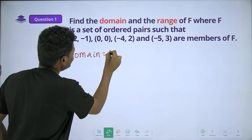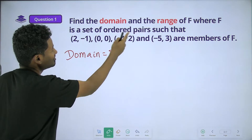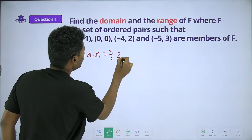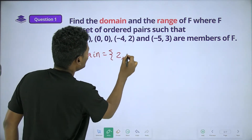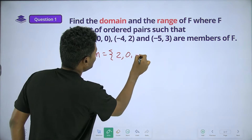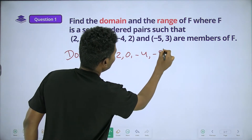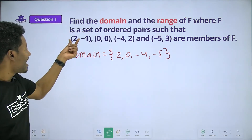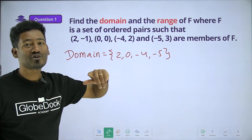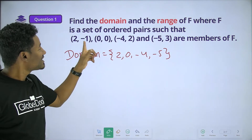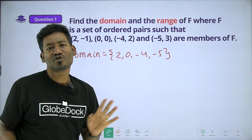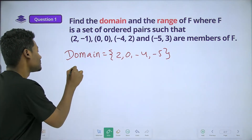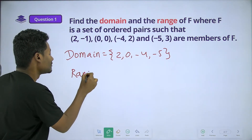Domain. Again, if we have a range of ordered pairs, we can join our values in the domain. Here are the two parts.